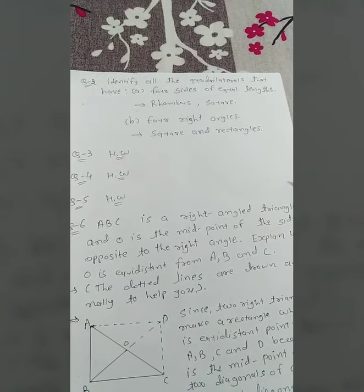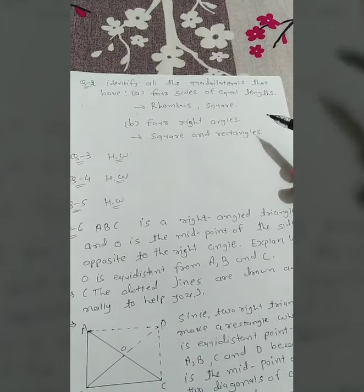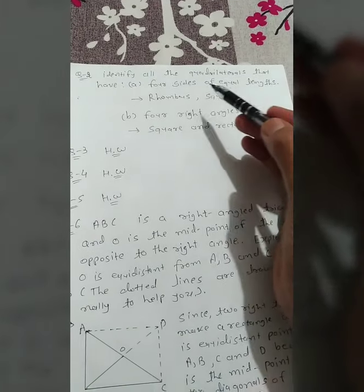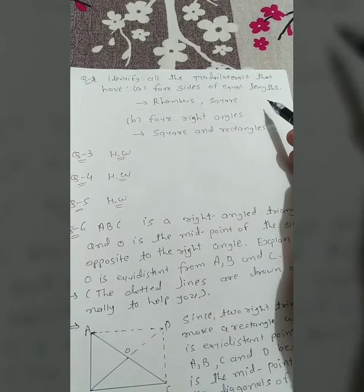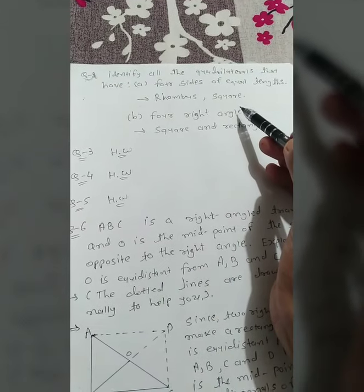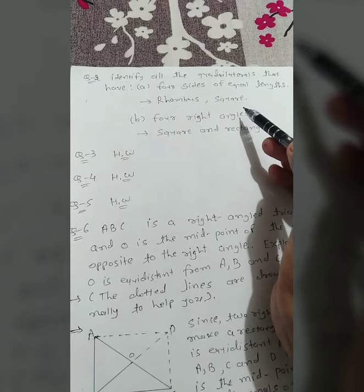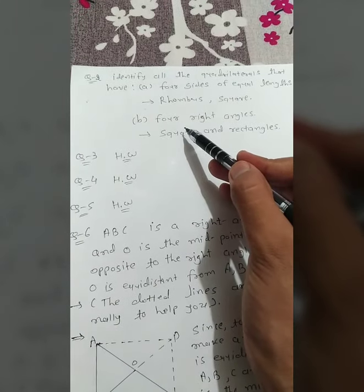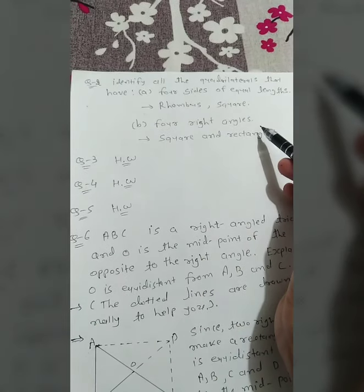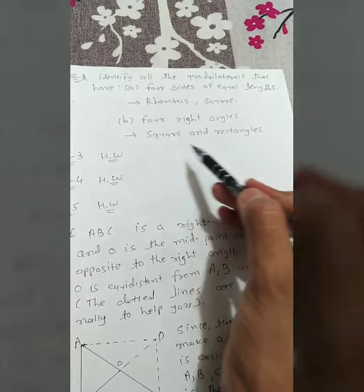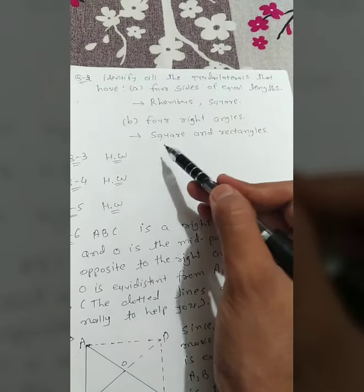Question No. 2: Identify all the quadrilaterals that have four sides of equal length. This is possible only in a rhombus and a square, so our answer is rhombus and square. Part b: four right angles — in a square and a rectangle there are four right angles, so our answer is square and rectangle.